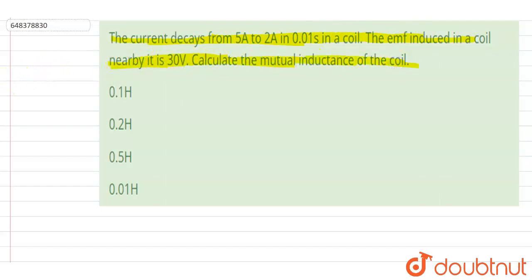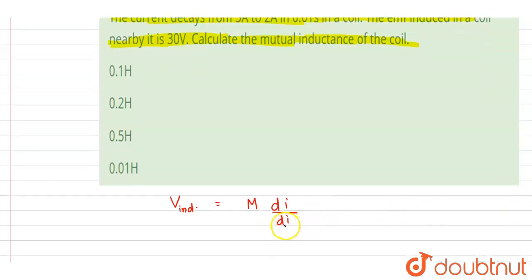So if I write down the induced emf, it will be equals to mutual inductance times the change in current by change in time. Right? So if you see, it is the rate of change of current.